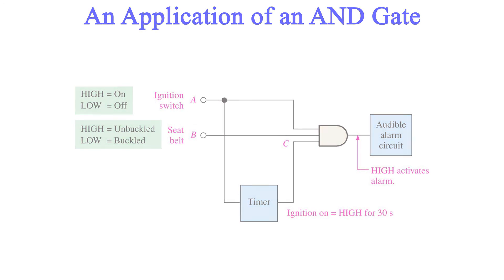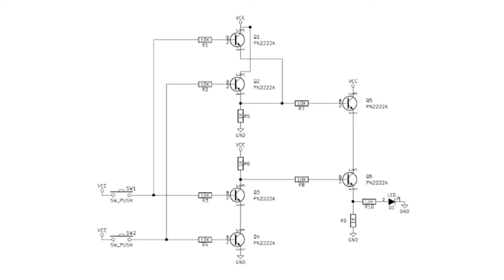So that's going to bring a close to our look at the AND gate. As a supplement to these videos on logic gates, I'm going to cover the transistor logic used to create these gates in a single video once we've covered the basic logic gates. I'll be showing you the circuits used to create an inverter, an AND gate, an OR gate, a NAND gate, a NOR gate, and an XOR gate. Next up is the OR gate. Until next time!